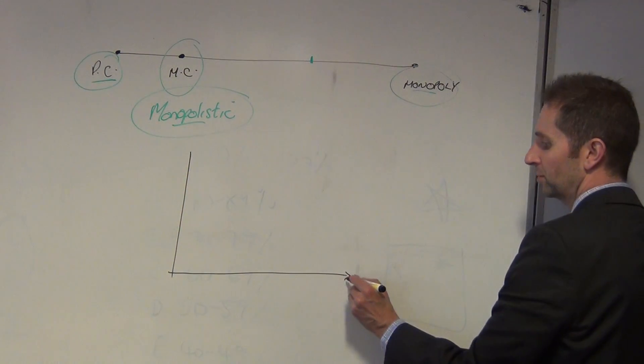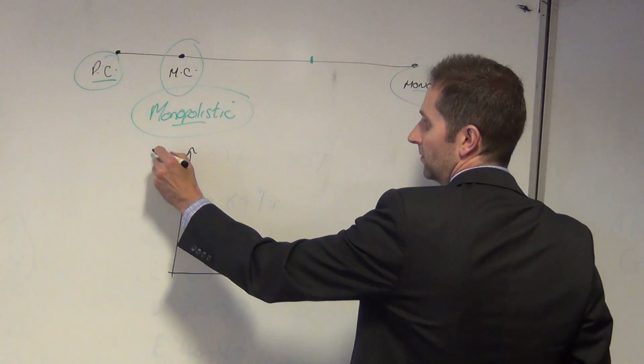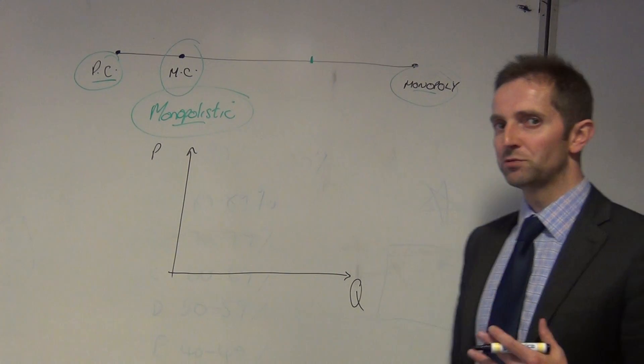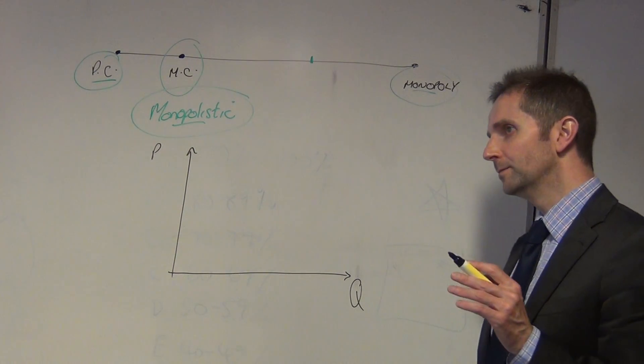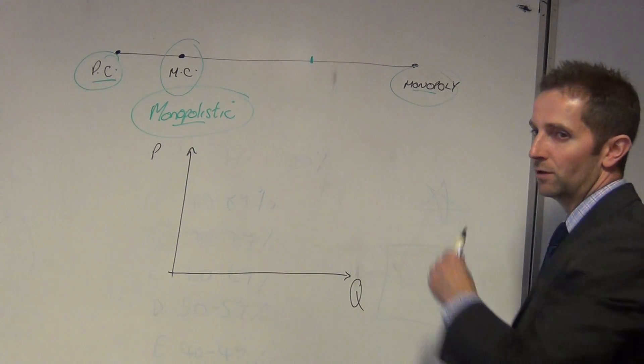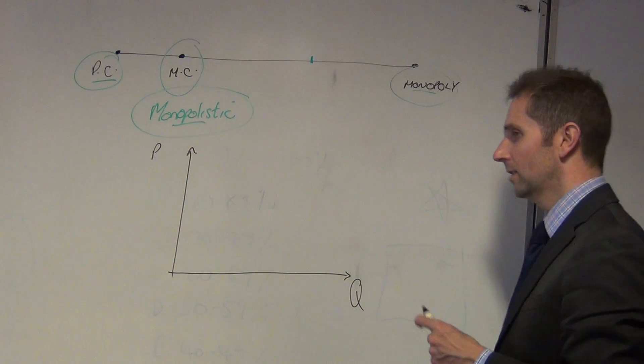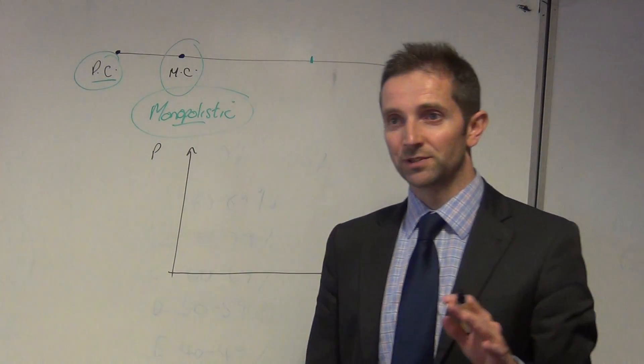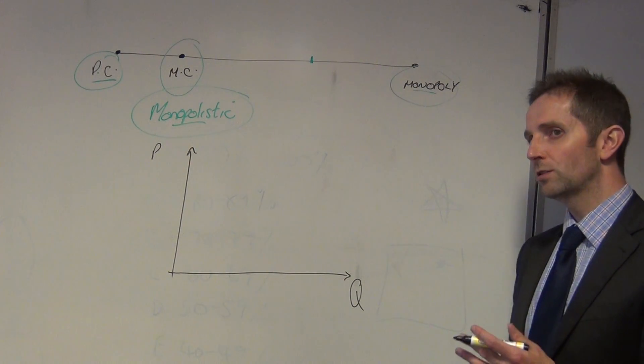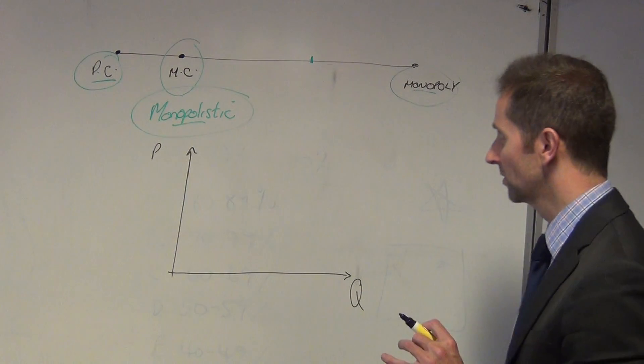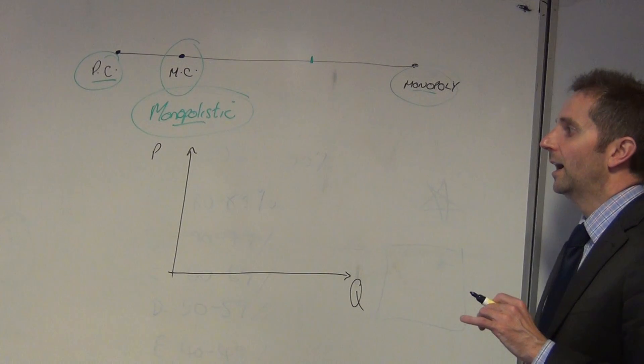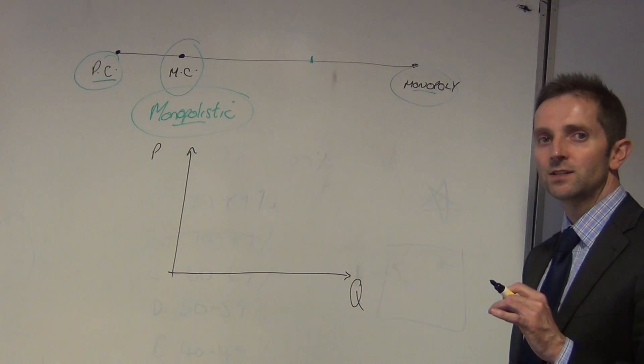So we've got our price, we've got our quantity. In terms of our average revenue curve, this time it's much more elastic than the one that we will have drawn for monopoly. The monopolist, as you recall, is the sole supplier. But in a monopolistically competitive market, where we have large numbers of very similar firms creating similar but not quite identical products, the demand curve tends to be much more elastic.